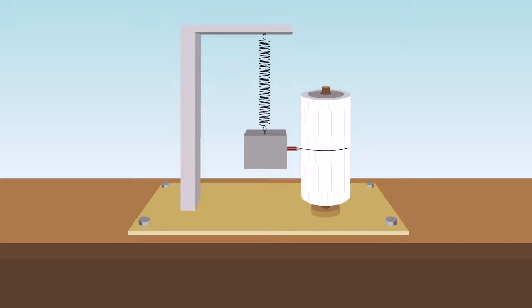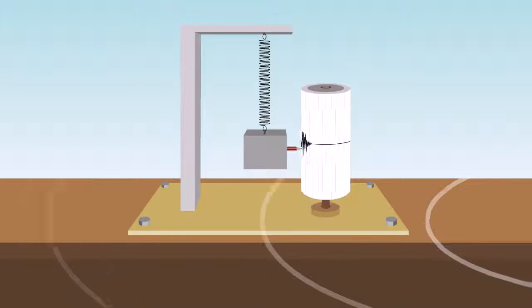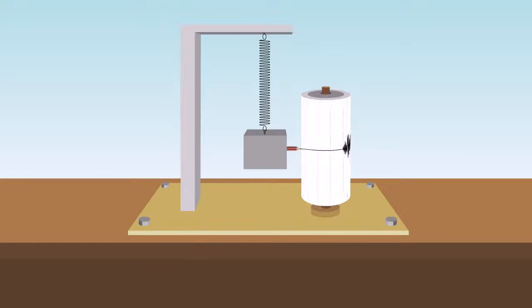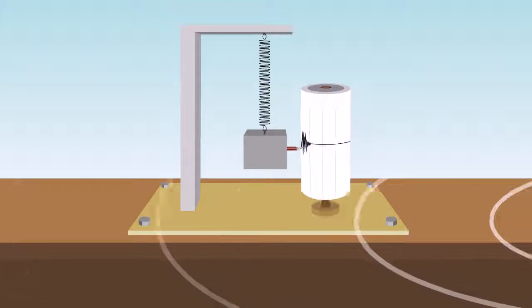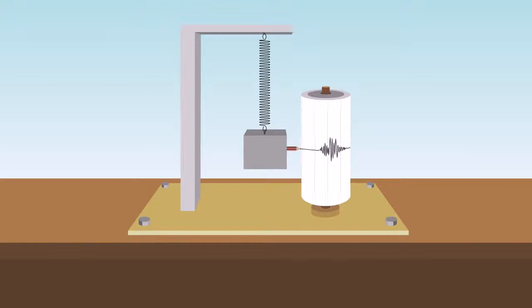When an earthquake occurs, the drum shakes and moves against the pen. The pen does not move because a weight holds it still. The marks on the paper show the size of the earthquake. A small motor continuously rolls the drum of paper.